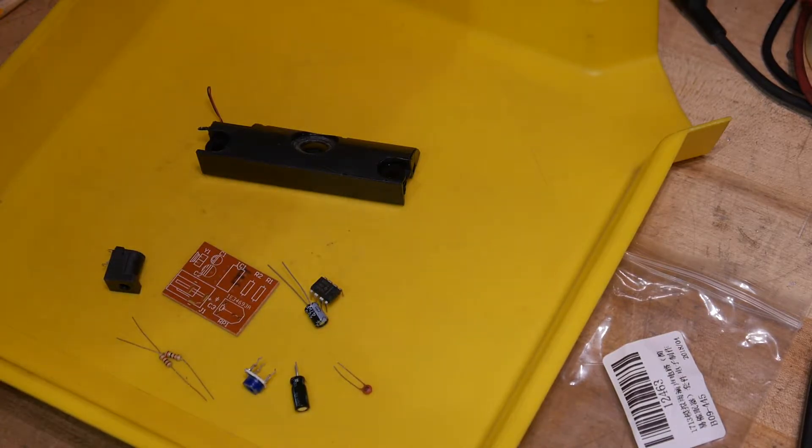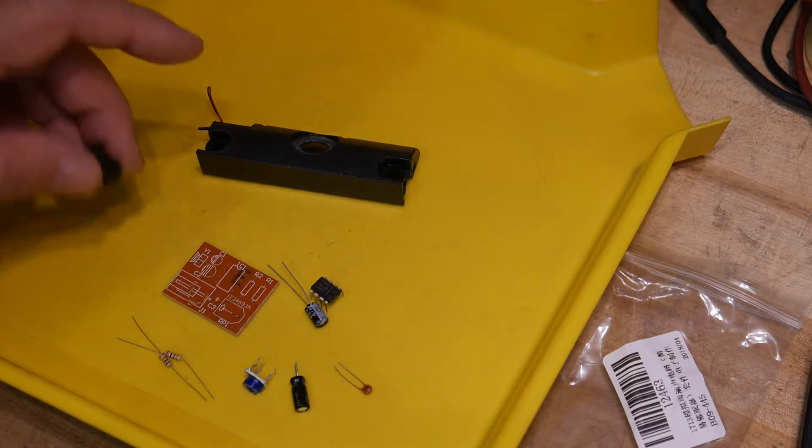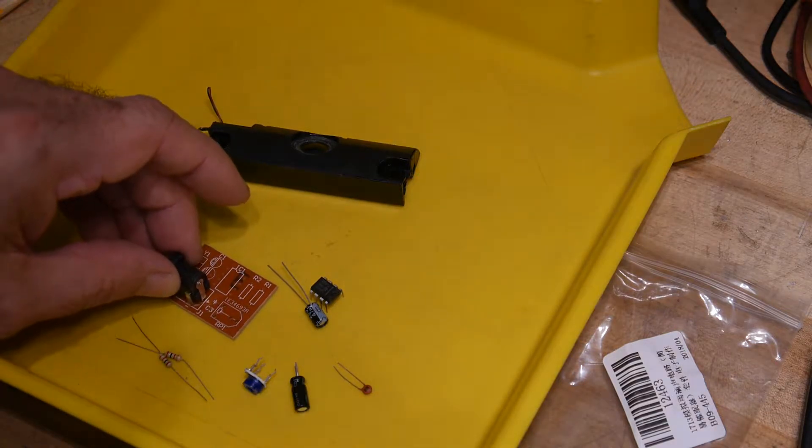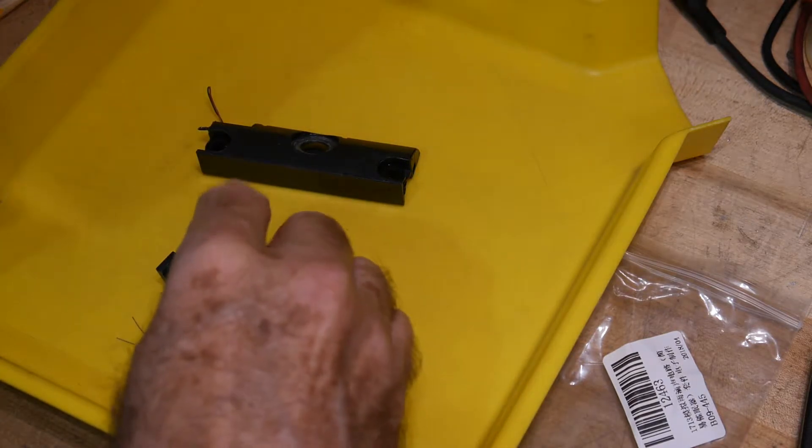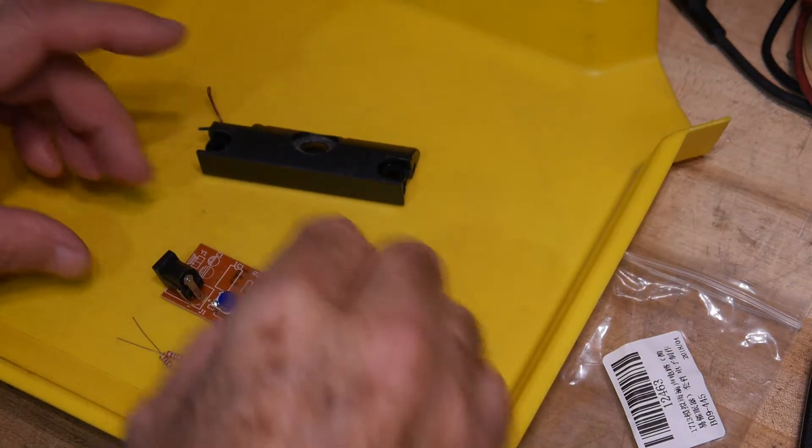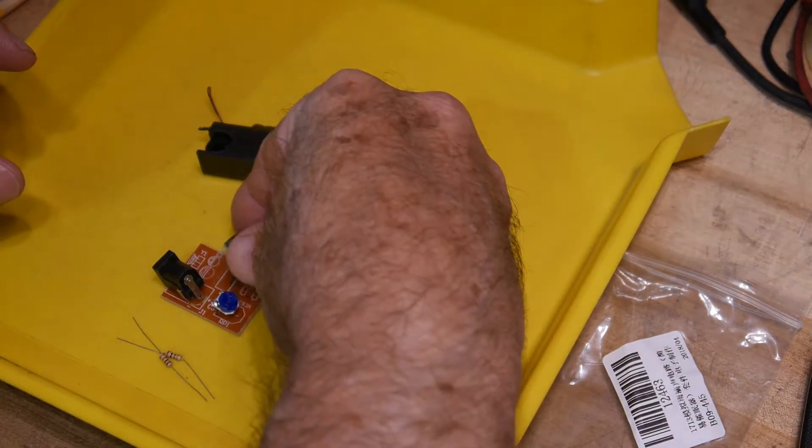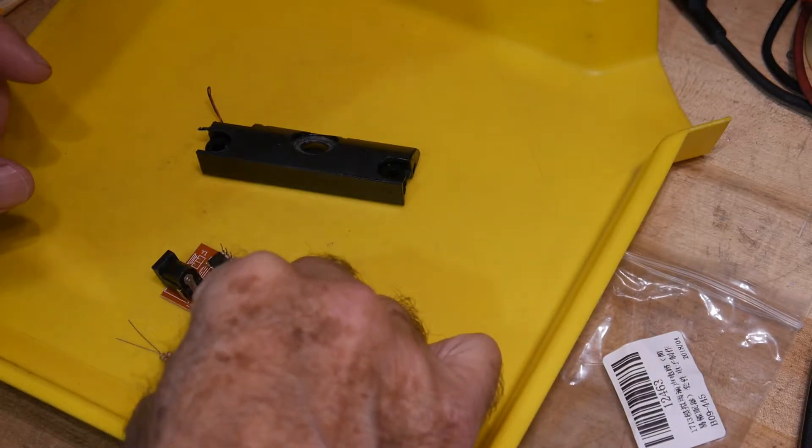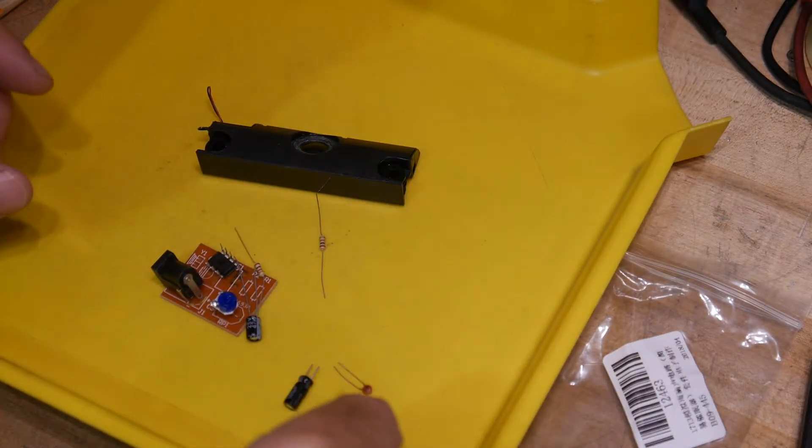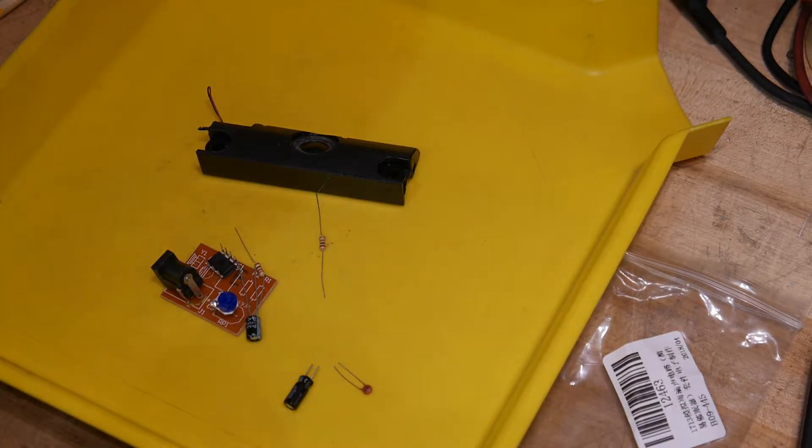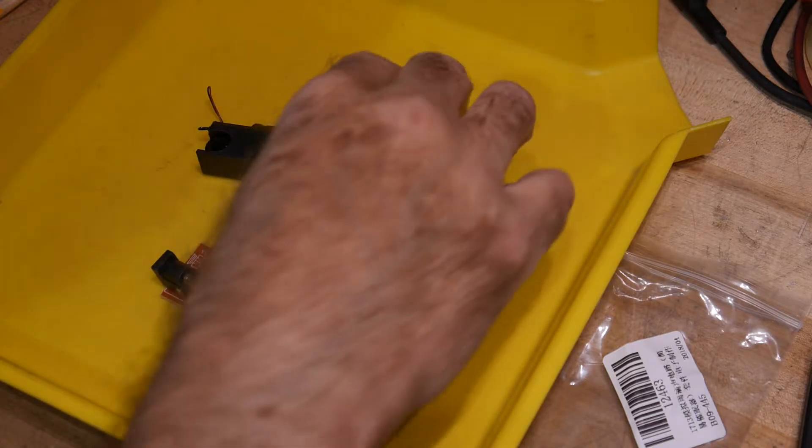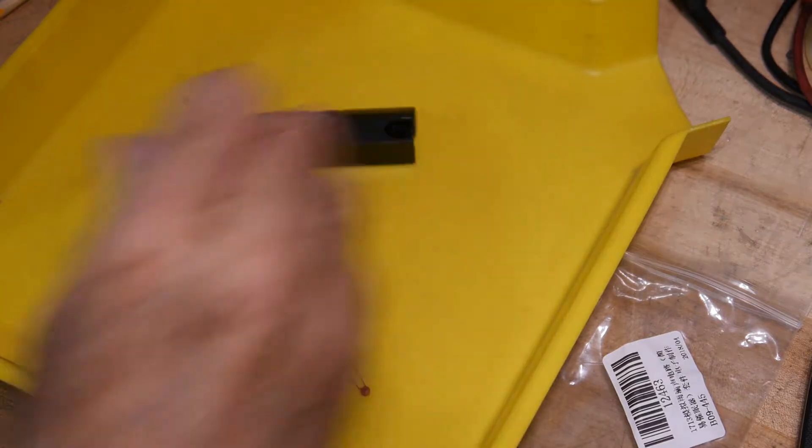There we go, there's silkscreen on the other side. So the power connector goes here, the potentiometer goes here, the resistors look like they're both the same. Let me get this thing built and see what it sounds like. Pretty strange.